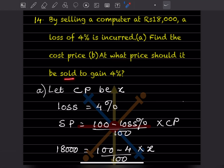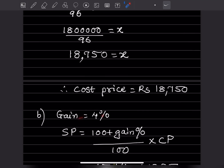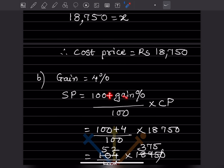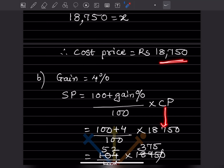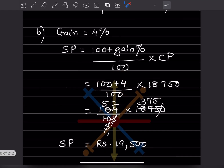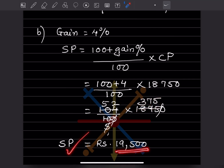For the second part — at what price should it be sold to gain 4%? Using the formula: SP = (100 + gain%) ÷ 100 × CP = 104/100 × 18,750. Simplifying: 104 × 187.5 = 19,500. The selling price to gain 4% is rupees 19,500.